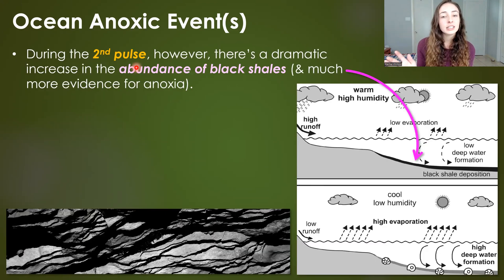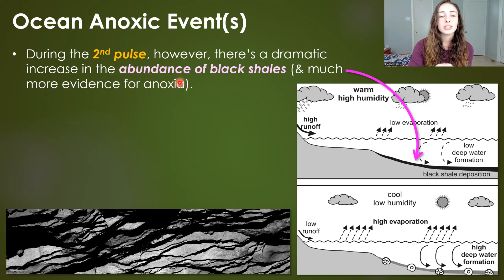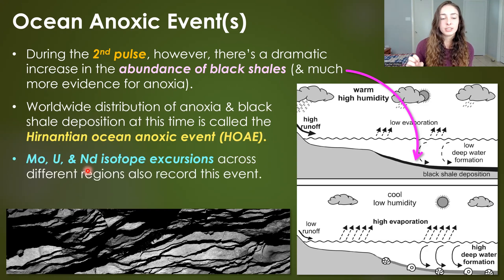Although we lean toward an oxic condition scenario for the first pulse of climate change during the Ordovician extinctions, we actually have solid evidence for ocean anoxia during the second pulse. During the second pulse, there is a huge increase in the abundance of black shales deposited in anoxic conditions, and the widespread distribution of anoxia is called the Hirnantian Ocean Anoxic Event or HOAE. Other redox-sensitive elements also record this anoxic event, from isotope excursions of molybdenum, uranium, and neodymium.